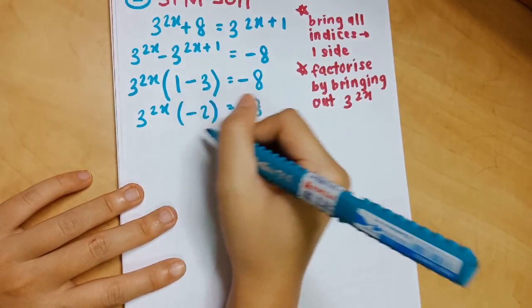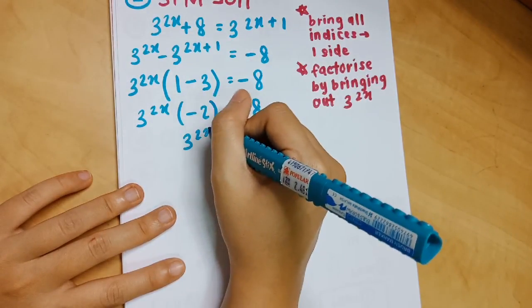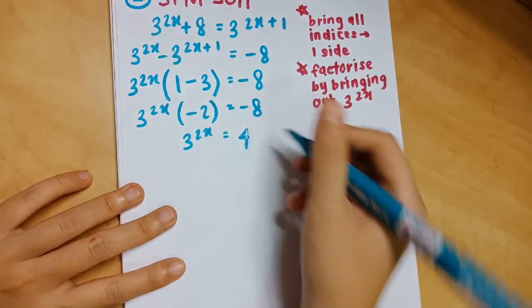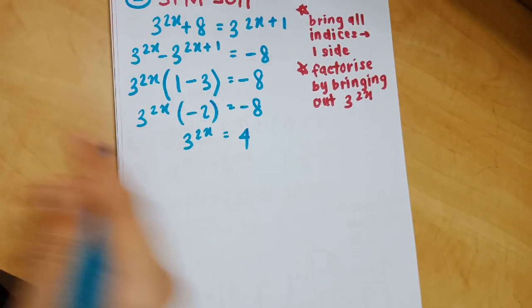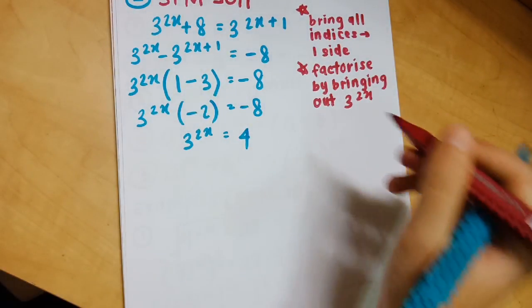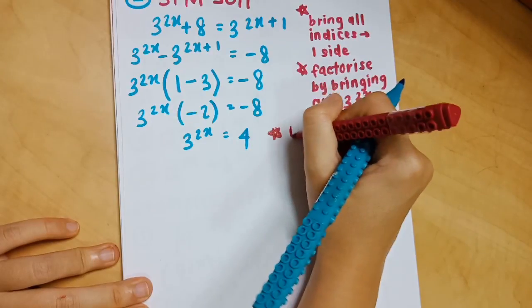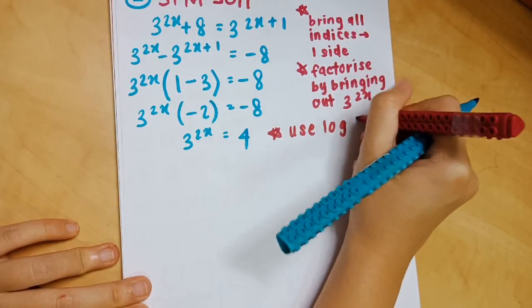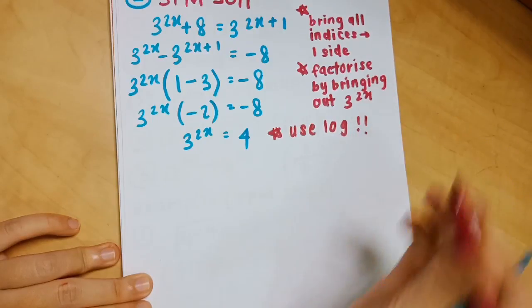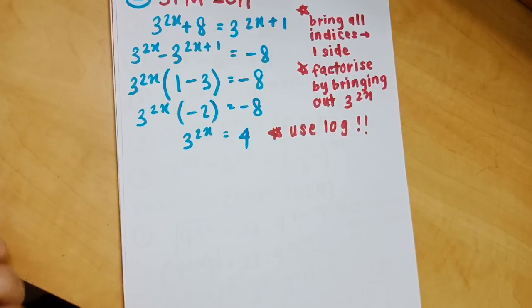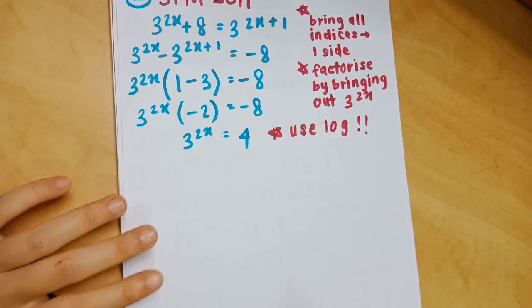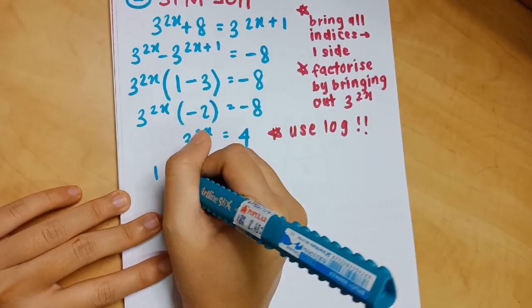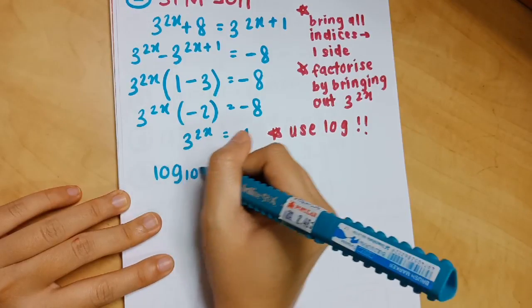Bring all numbers to one side again: 3^(2x) = −8 ÷ −2 = 4. Once you reach this step, you must use logarithm — log both sides of the equation. There is no other way to solve it. So place log in front of 3^(2x) and log in front of 4.